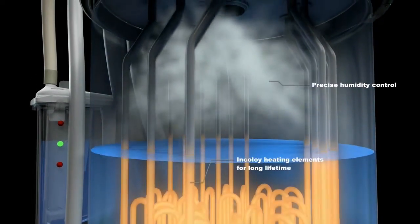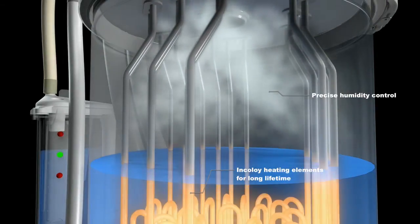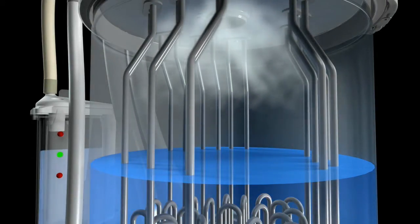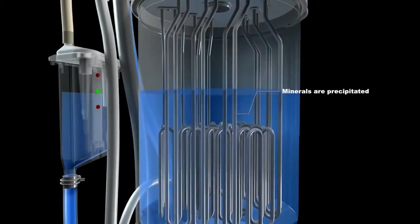Minerals precipitate from the water during the evaporation process in every steam humidifier. Some are removed by periodic drain cycles while the remaining minerals are normally deposited in the steam cylinder.